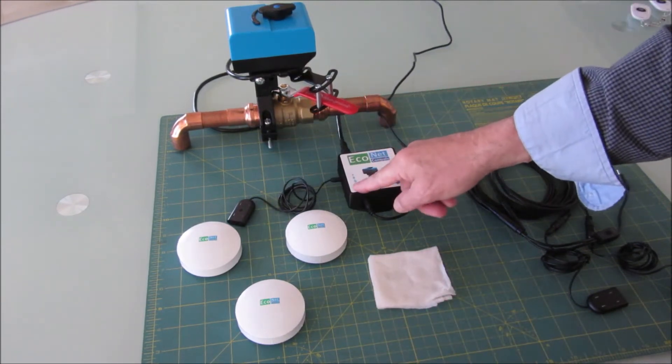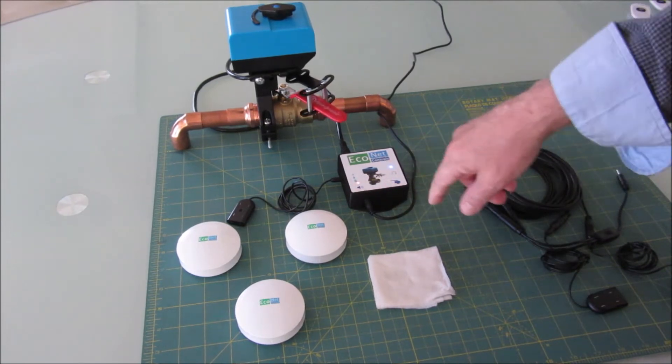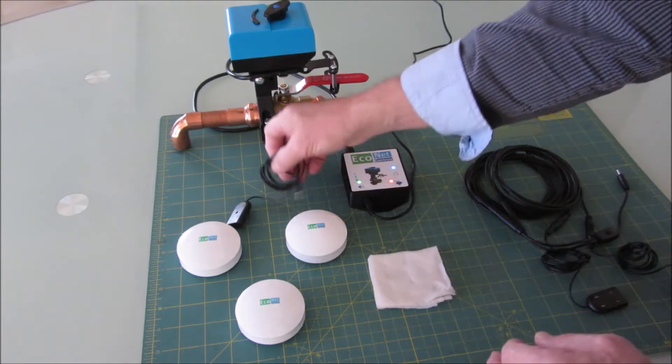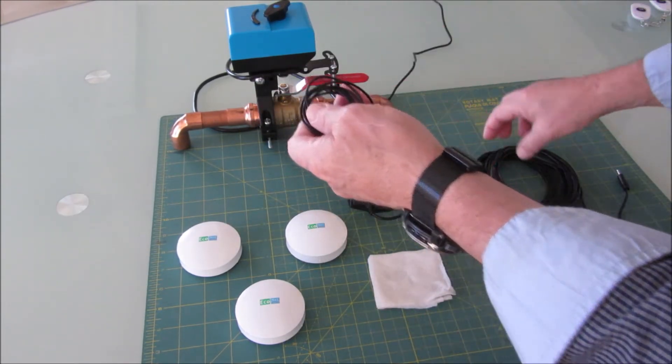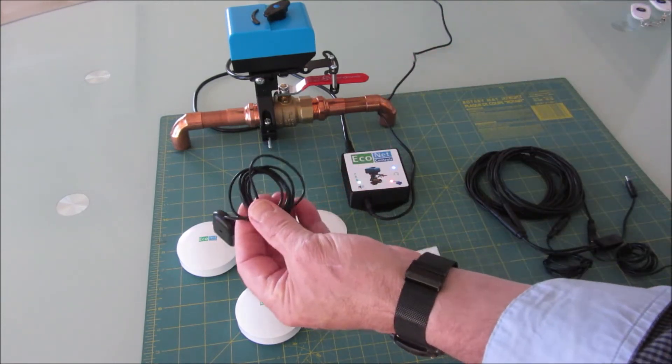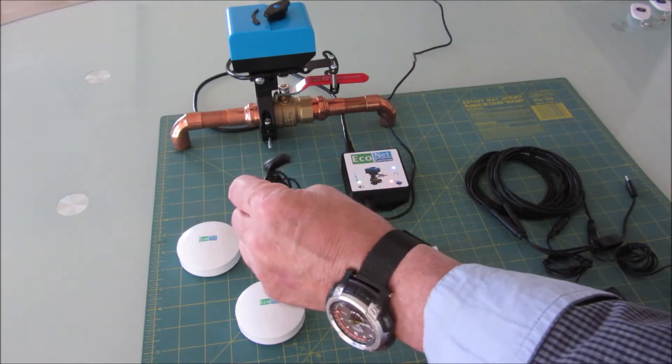So let's reset the alarm, turn the valve back on. There's two options we're offering. Of course, you can make your own extension cables and splitter cables, but we offer it with just the leak sensor, which is this here.